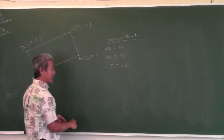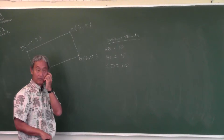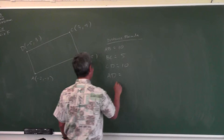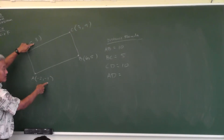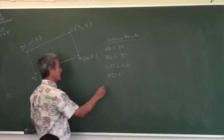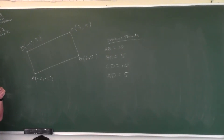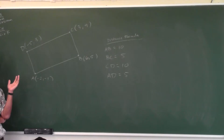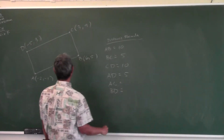Now for AD: the difference in x is 3, the difference in y is 4 — three-four-five, a diagonal Pythagorean triple right there. Looking at this, if the opposite sides are equal, this has to be a parallelogram — but it could also be a rectangle. To test if it's a rectangle, look at the diagonals. Let's compute diagonals AC and BD.